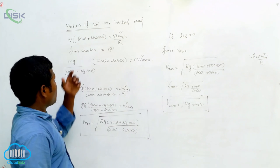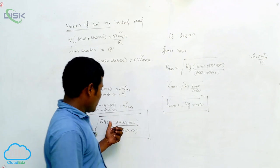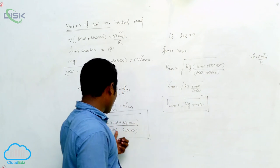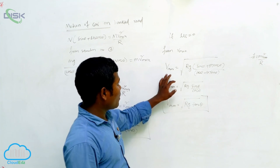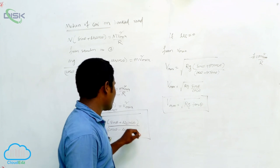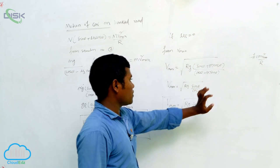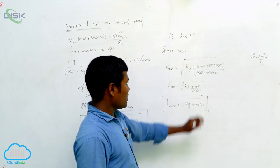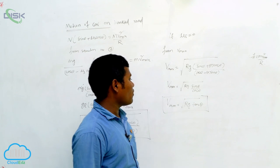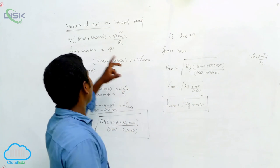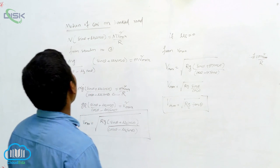So here, the final equation for the motion of car on banked road: V max equals square root of R g times (sin theta plus mu-s cos theta) divided by (cos theta minus mu-s sin theta). If mu-s equals zero, simply substitute mu-s equal to zero everywhere — the remaining term is sin theta divided by cos theta, which is tan theta. Therefore V max equals square root of R g tan theta. This is how we derive the motion of a car on a banked road.